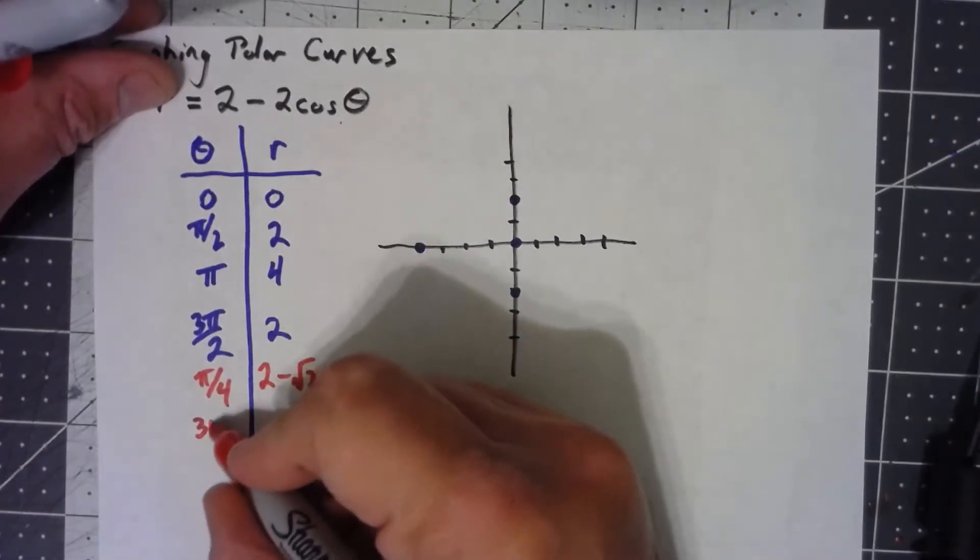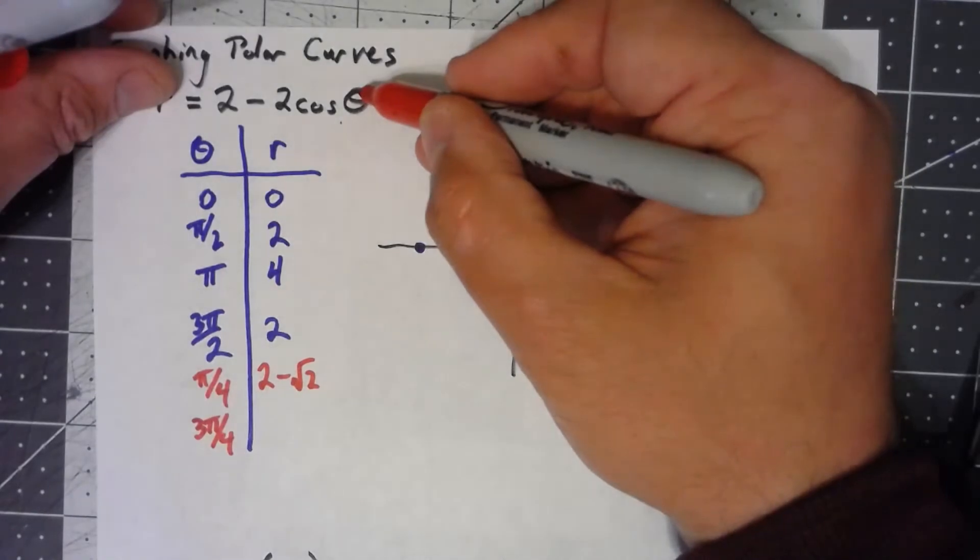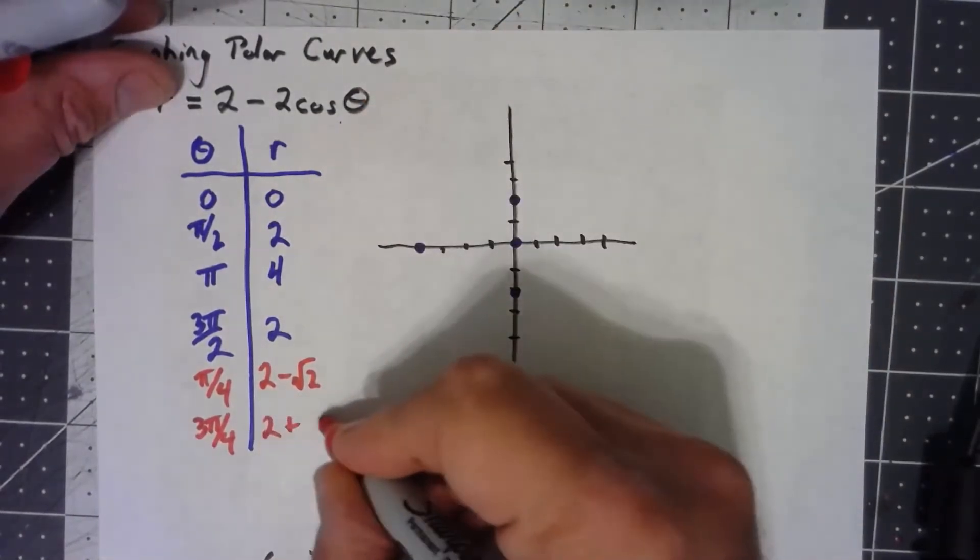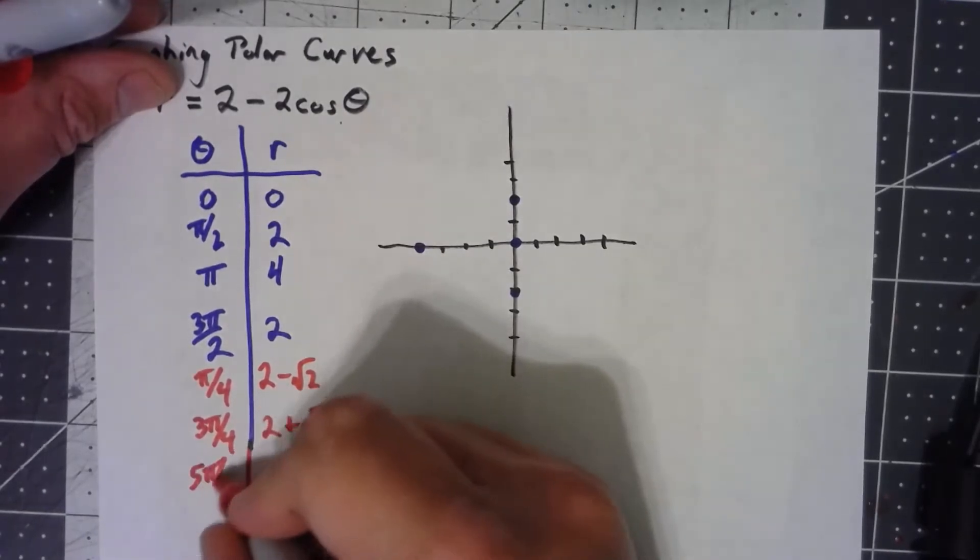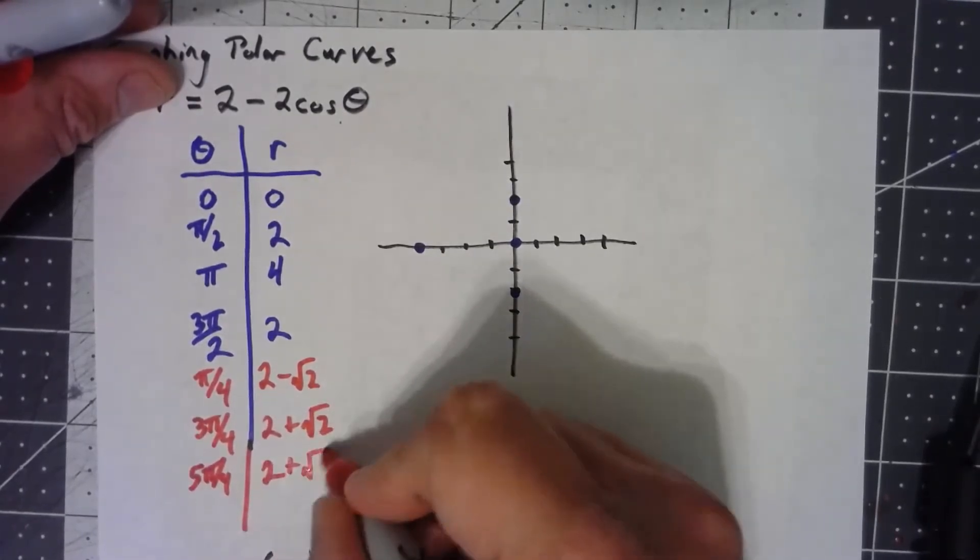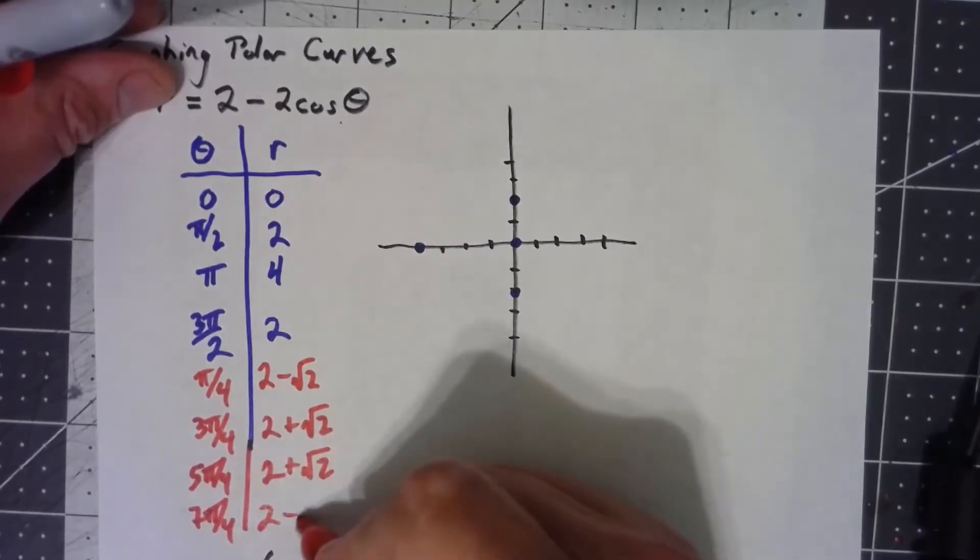If I put in 3 pi over 4, I'm going to get a negative root 2 over 2, so I get a 2 plus root 2. At 5 pi over 4, I also get a 2 plus root 2. And at 7 pi over 4, I get a 2 minus root 2.